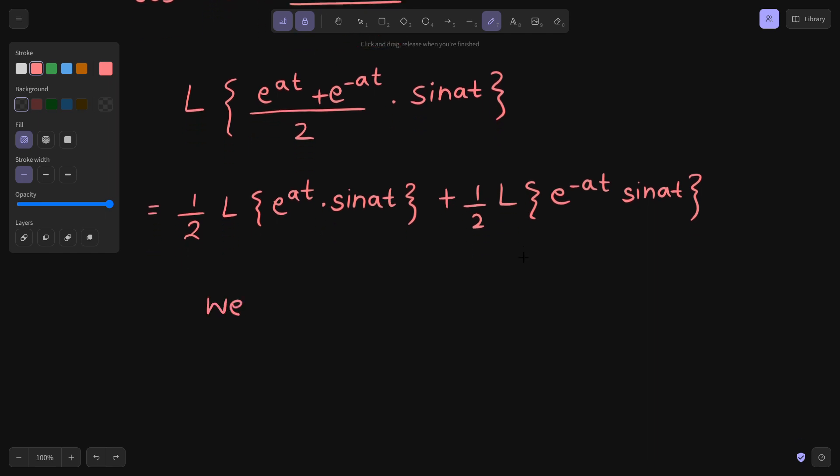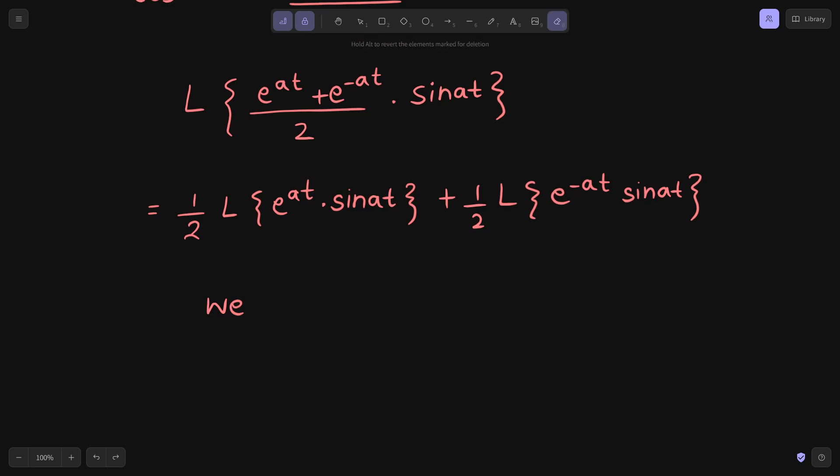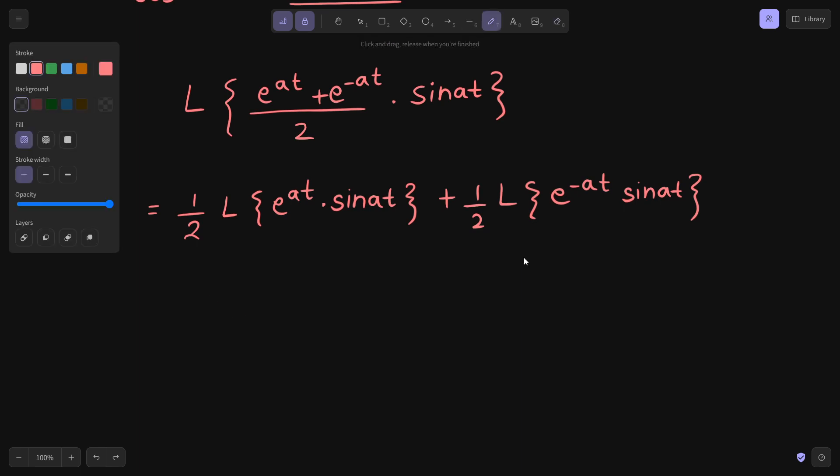So what we can do is we can separately find the Laplace transform of sin at. We know Laplace of sin at is a divided by s square plus a square.